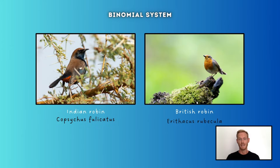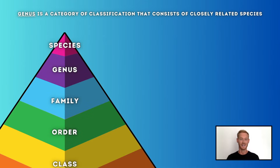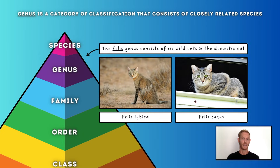Each species must be named in such a way that the name is recognized all over the world. The binomial system of naming organisms is an internationally agreed system in which the scientific name of an organism is made up of two parts, showing the genus and the species. Genus is a category of classification that ranks above species and consists of closely related species. For example, the Felis genus consists of six small wild cats as well as the domestic cat, Felis catus. These seven species are very closely related, but they're classified as individual species as they cannot produce offspring.